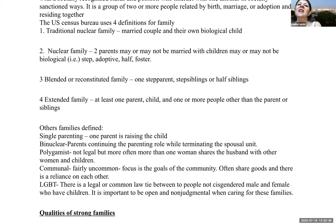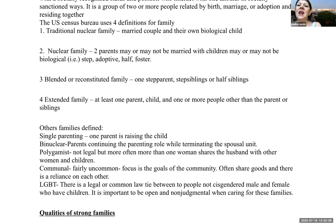Next is the nuclear family: two parents who may or may not be married with children who may or may not be biological — including stepchildren, adoptive, half, or foster children. A blended or reconstituted family includes one stepparent and step or half siblings. An extended family is at least one parent and child plus one or more people other than the parent or siblings — often grandparents.